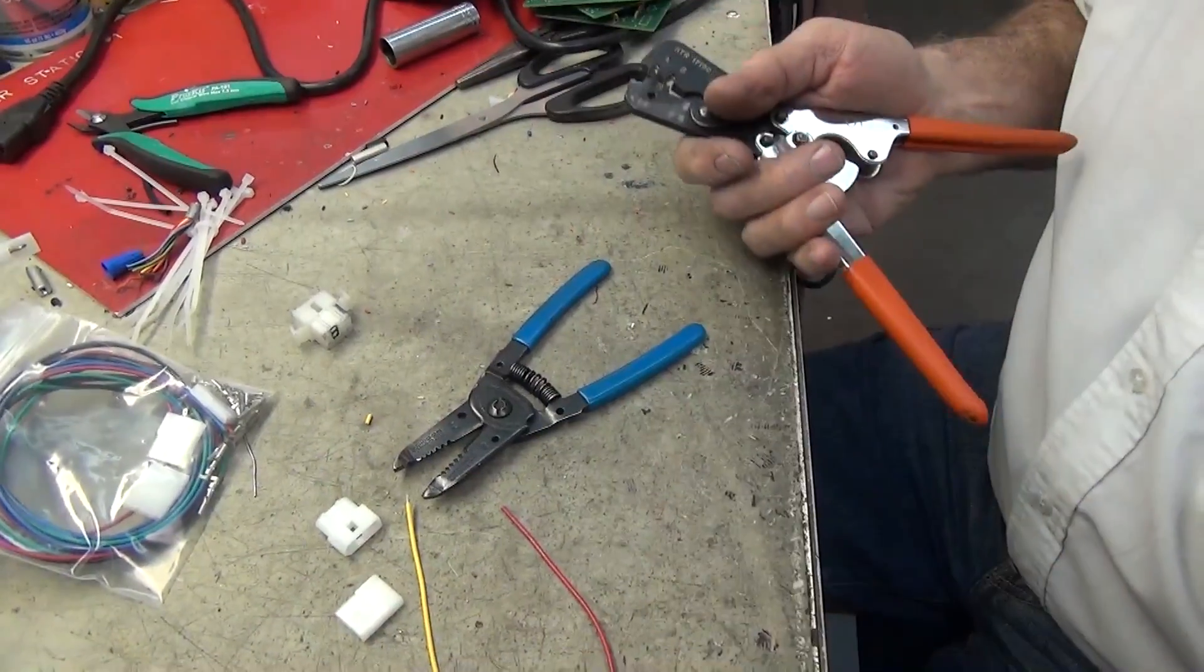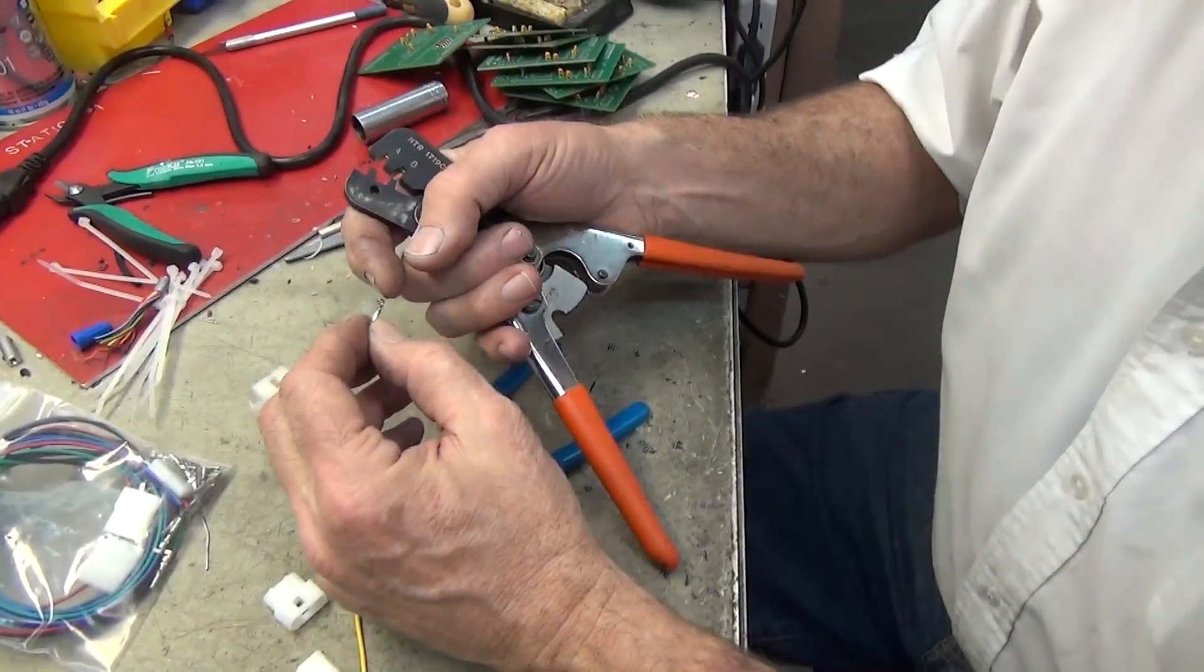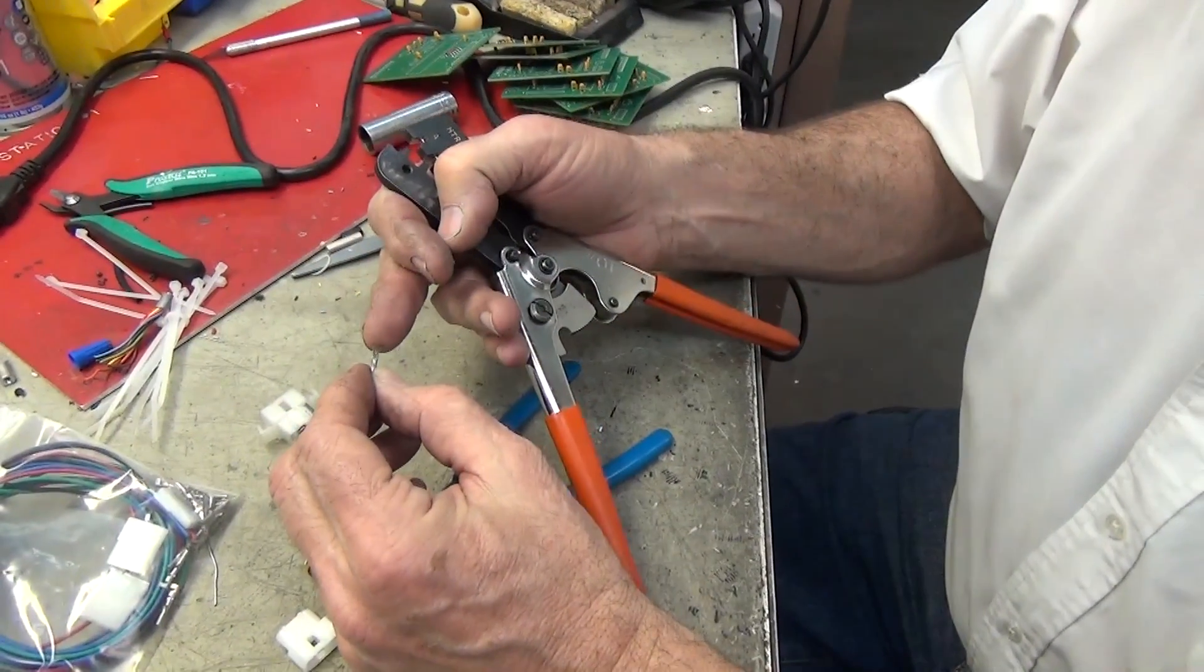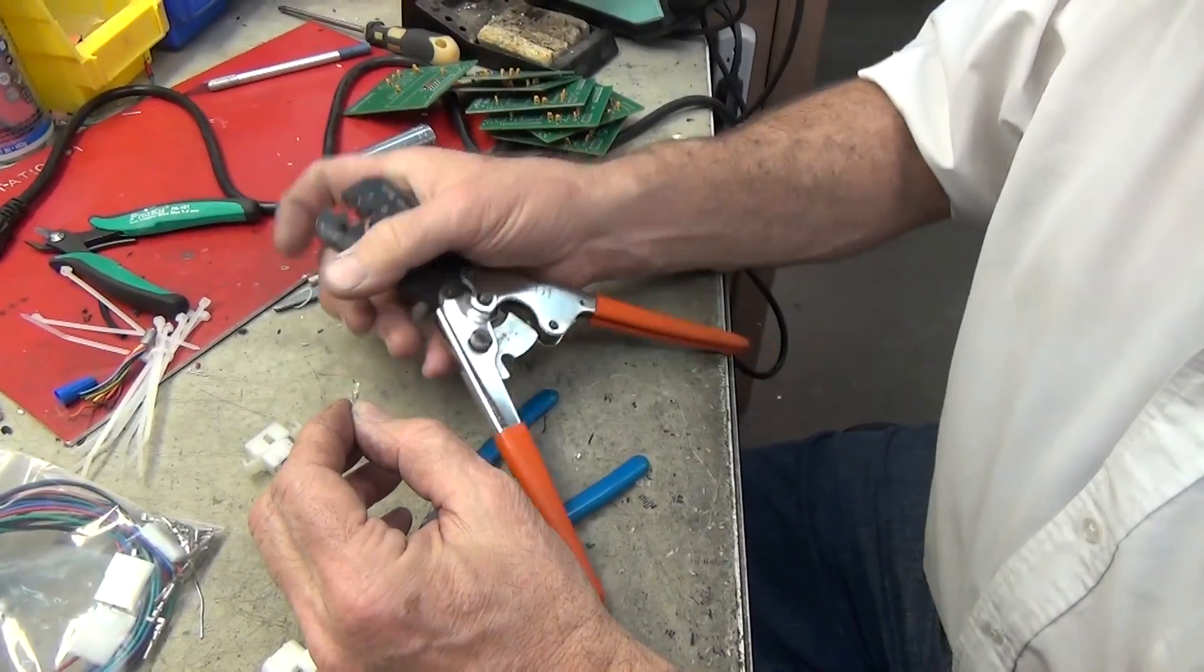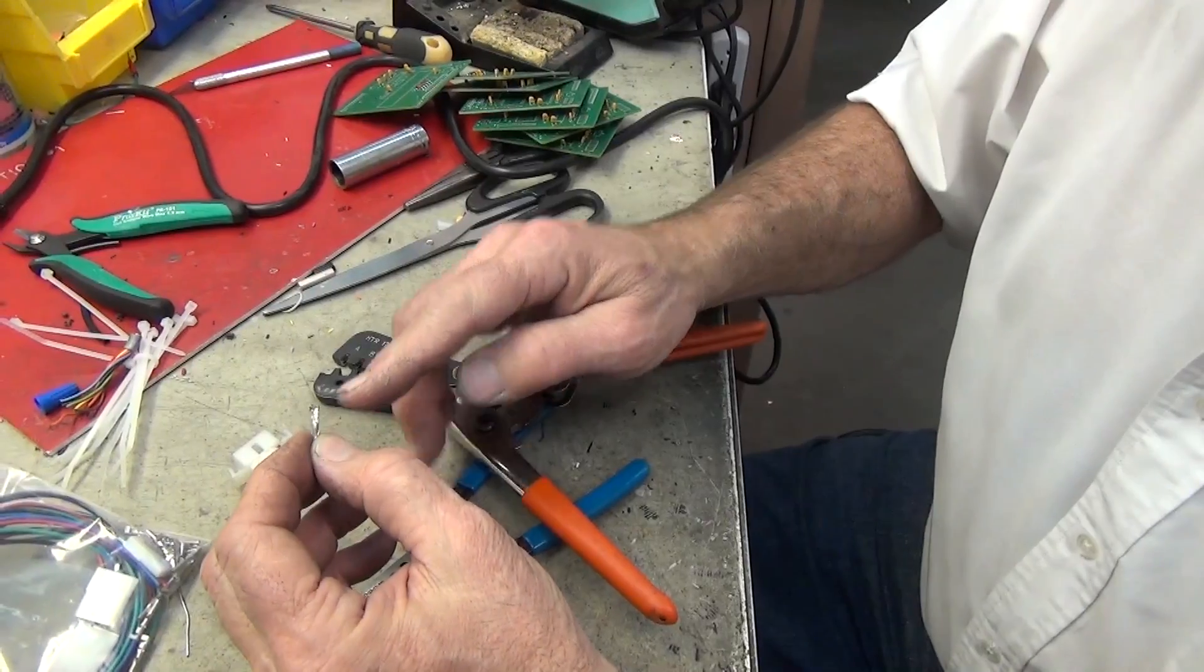These are the crimpers you're going to use. Here are the pins—notice there's two crimps on the pin. The rear crimp crimps onto the wire insulation, and the front crimp crimps onto the wire itself.